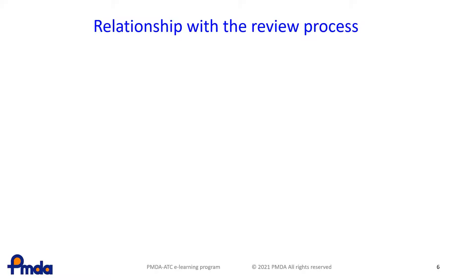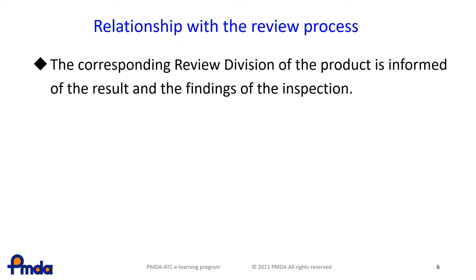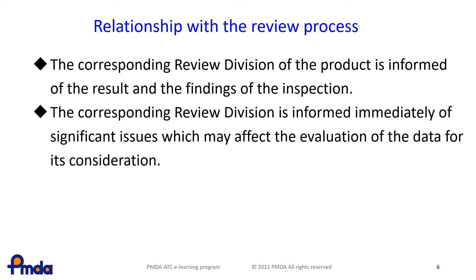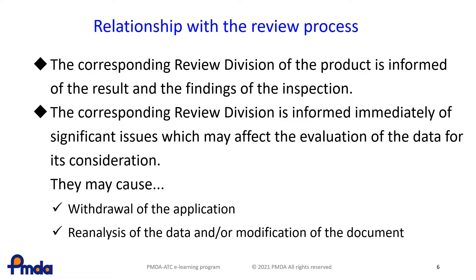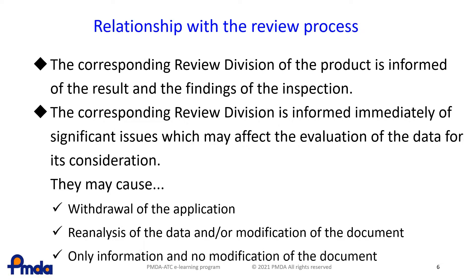This slide shows the relationship between an inspection and the review process of the product. The corresponding review division is informed of the results and findings of the on-site and/or document-based inspection, and the information is described in the review report of the product. In a case where the findings of the inspection are very serious, the situation is reported immediately to the review division because it may affect the evaluation of the data. Significant issues may cause a withdrawal of the application, a re-analysis of the data, or a modification of the application document depending on the significance of the issues found. If the issues are only for information, it will need no modification of the review document.